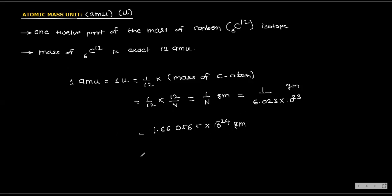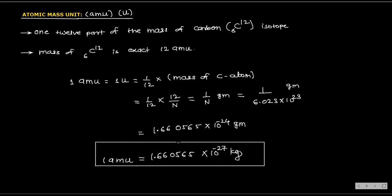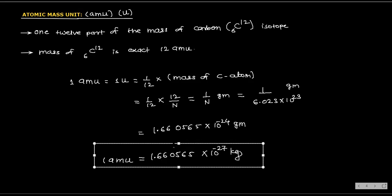Converting to kilograms: 1 AMU = 1.660565 × 10⁻²⁷ kg. This is the value of one atomic mass unit, and it is nearly equal to the mass of a proton.